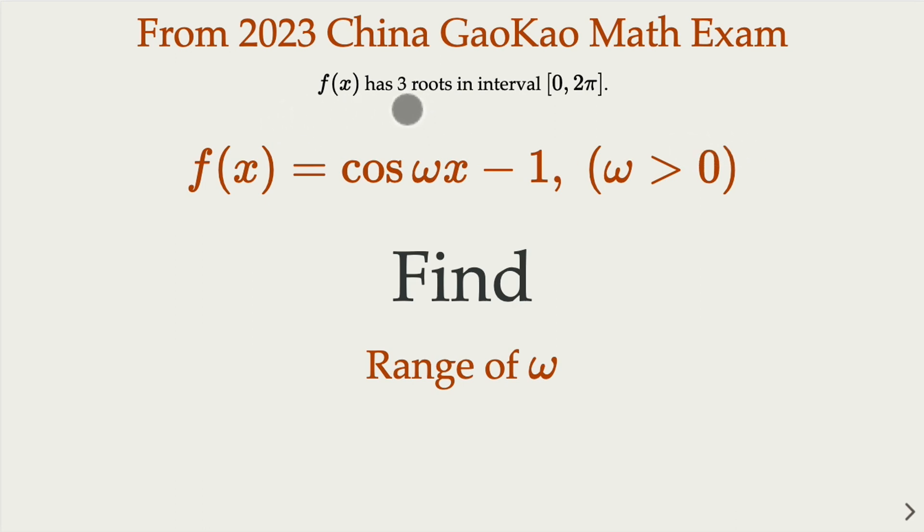So f(x) has three roots in the interval from 0 to 2π, where of course f(x) is cosine ω x, where ω is a constant that we don't know, minus 1. We try to find the range of ω such that this function has three roots in the interval from 0 to 2π.